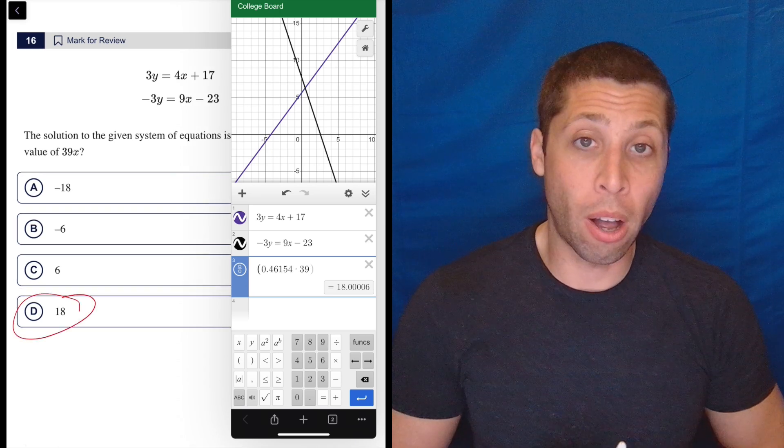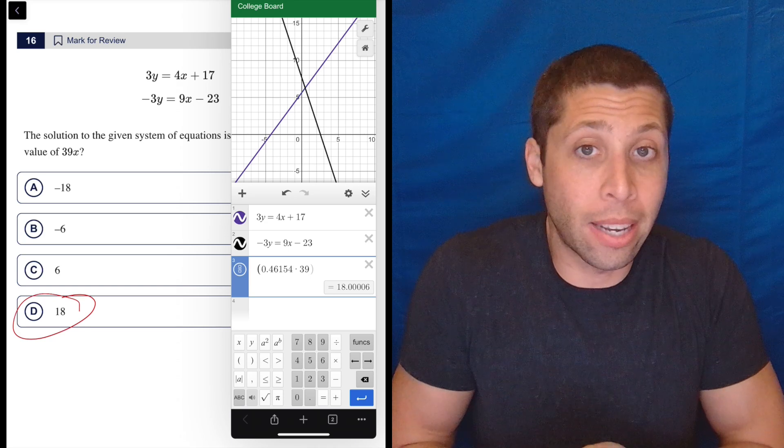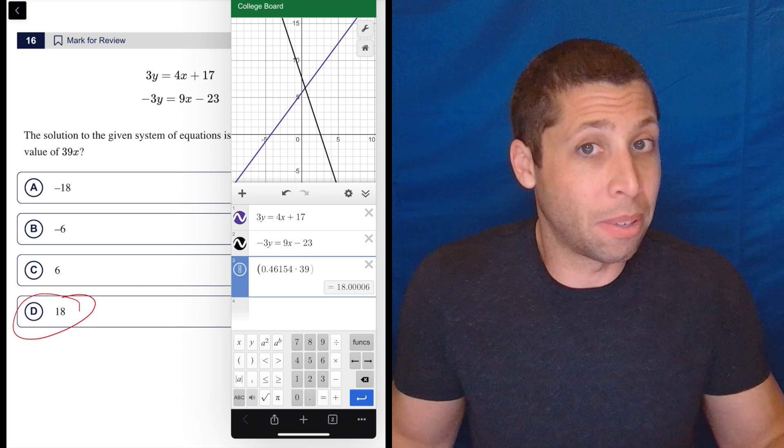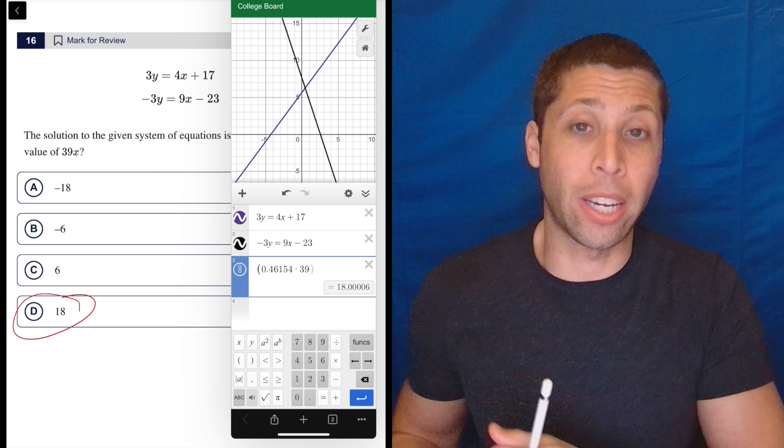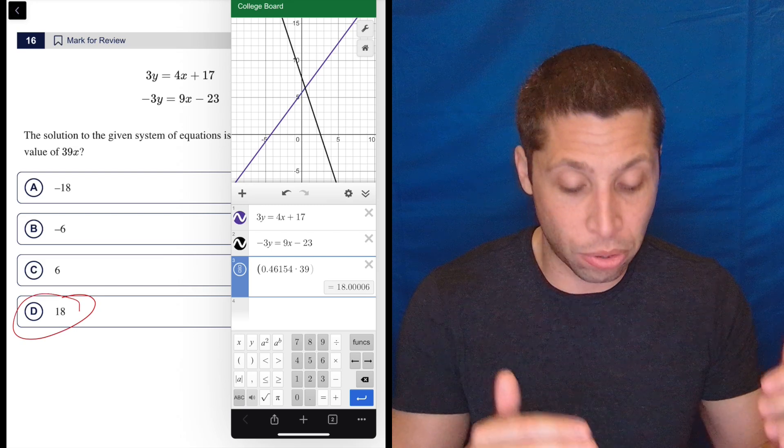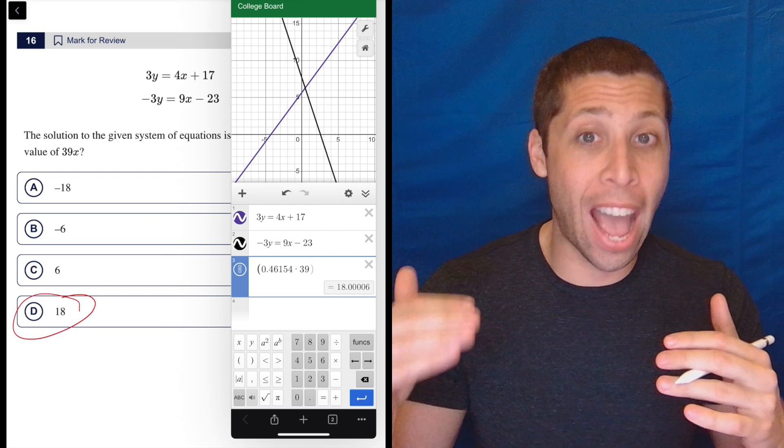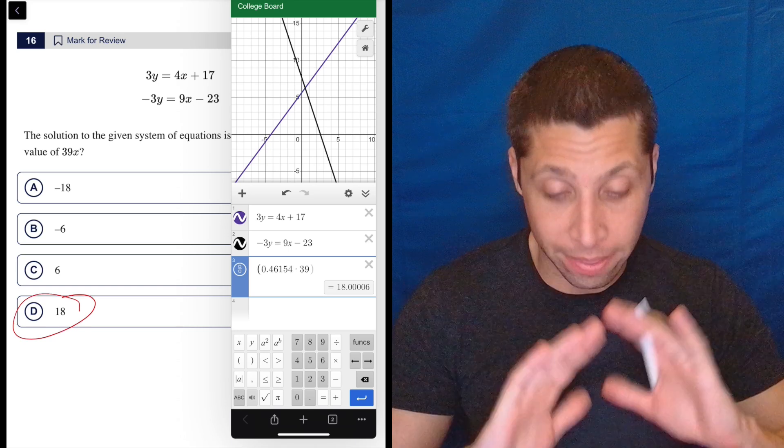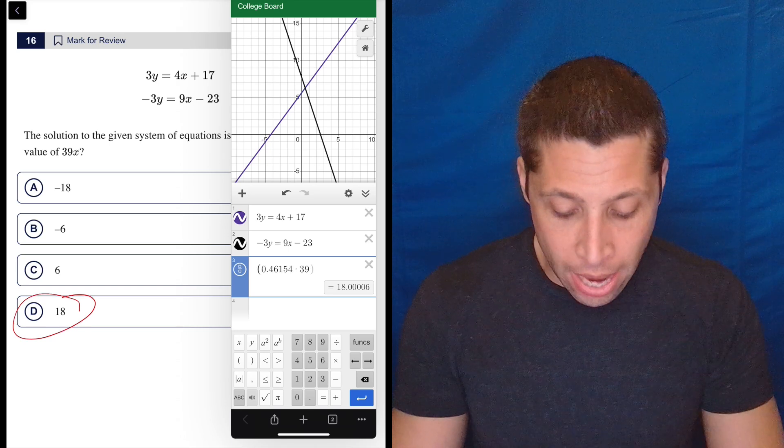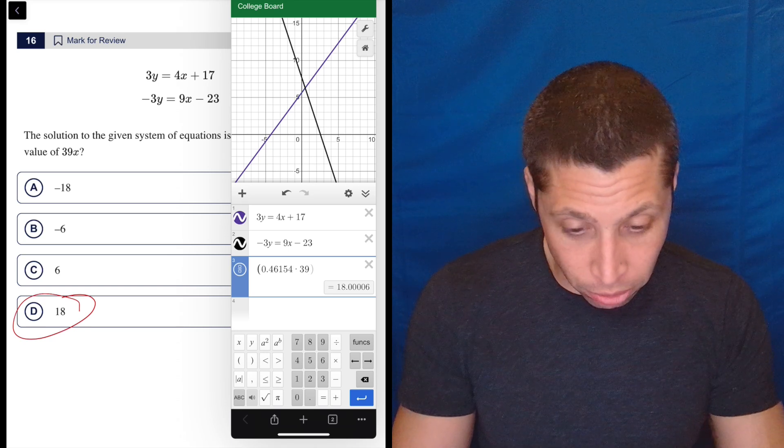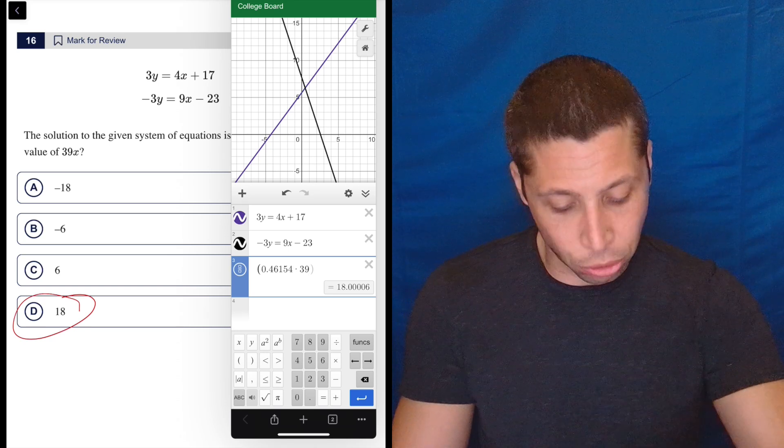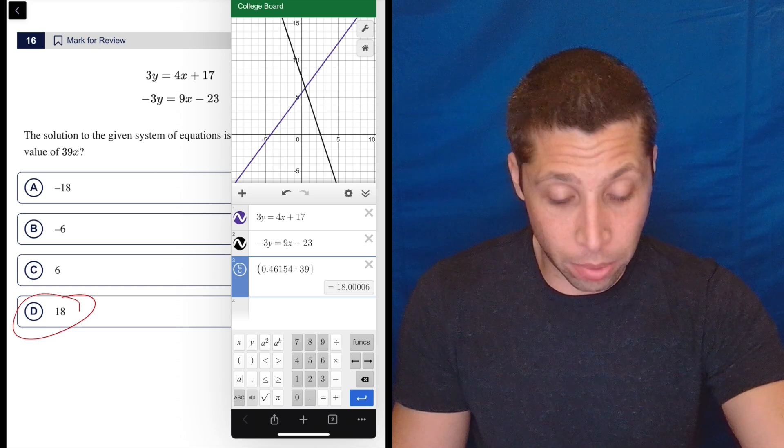So I would do that just because, like I said, I don't want to risk a mistake at all. And I feel like my lowest chance of a careless mistake is just typing it in Desmos. And before I acknowledge my answer, I just double check that I actually typed it into Desmos correctly. That's it. That's the only thing I can really mess up. And even if I had messed up the 39 thing, right, there's no answer choice that's this without the 39.